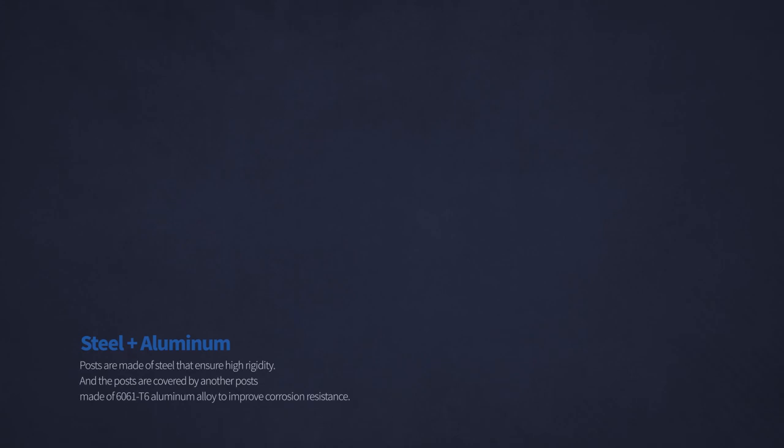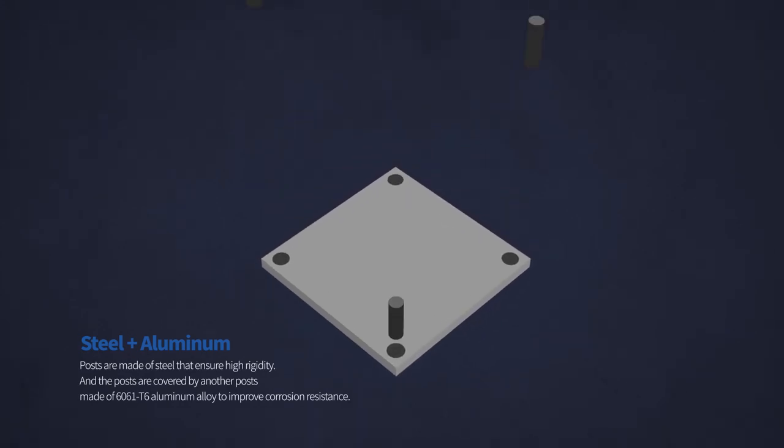For safety barriers, the posts are made of steel that ensure high rigidity, and the posts are covered by another posts made of 6061 T6 aluminum alloy to improve corrosion resistance.